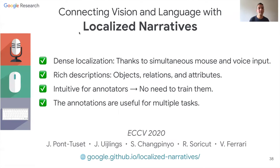In conclusion for the first part, I have shown you localized narratives. They offer dense localization: thanks to simultaneous mouse and voice input, we can ground every word in the caption up to a mouse trace. They offer rich descriptions of objects, relations, and attributes, which are intuitive to produce, meaning we can produce at scale without even needing to train annotators. The annotations are useful for multiple tasks — we have seen controlled captioning and image generation — and in the next part of the talk I'm going to show image retrieval.